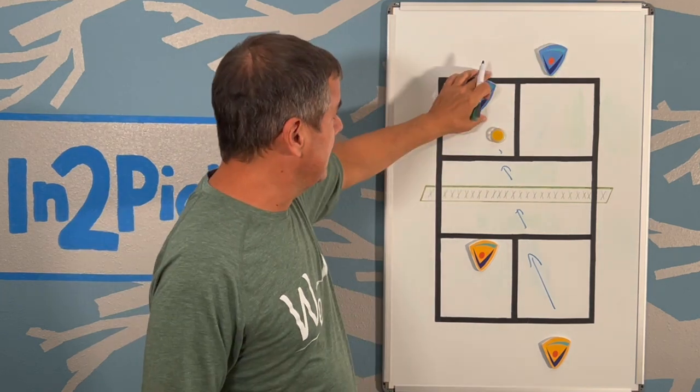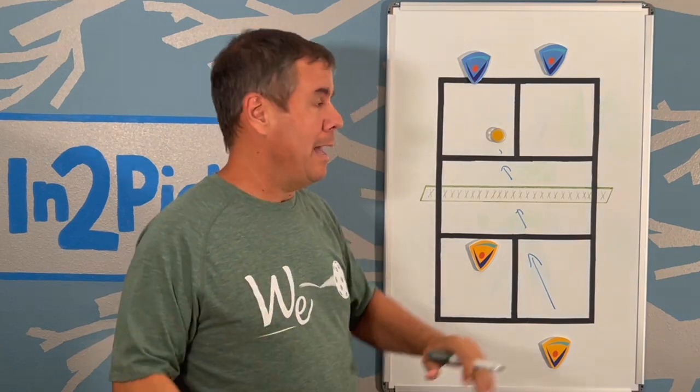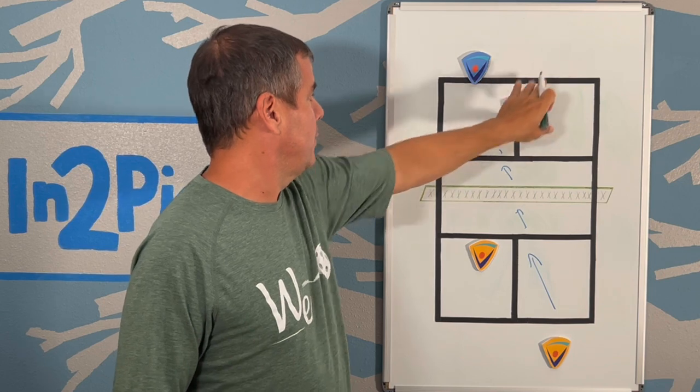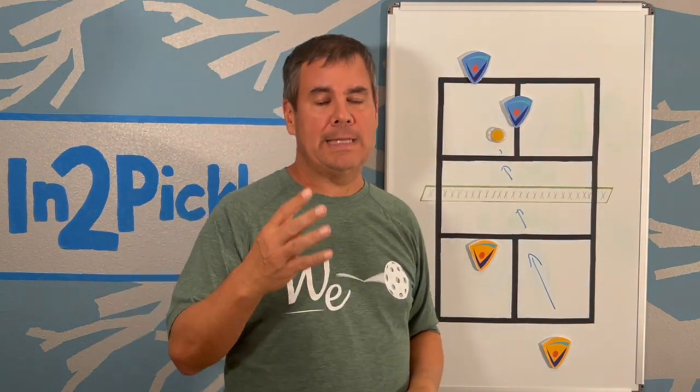So what happens in this case is because it's a short attack of a return of serve, what will happen is this player will come over to take that shot. So this player will come over here with the forehand to attack the short return of serve and take advantage of it.